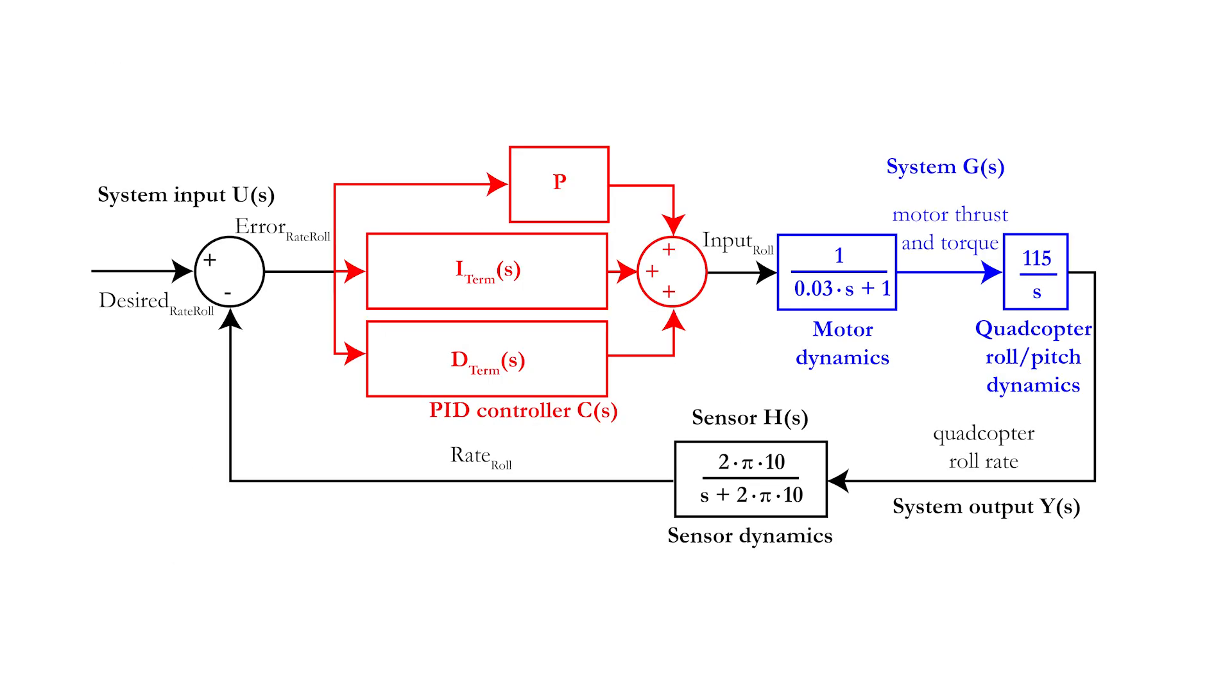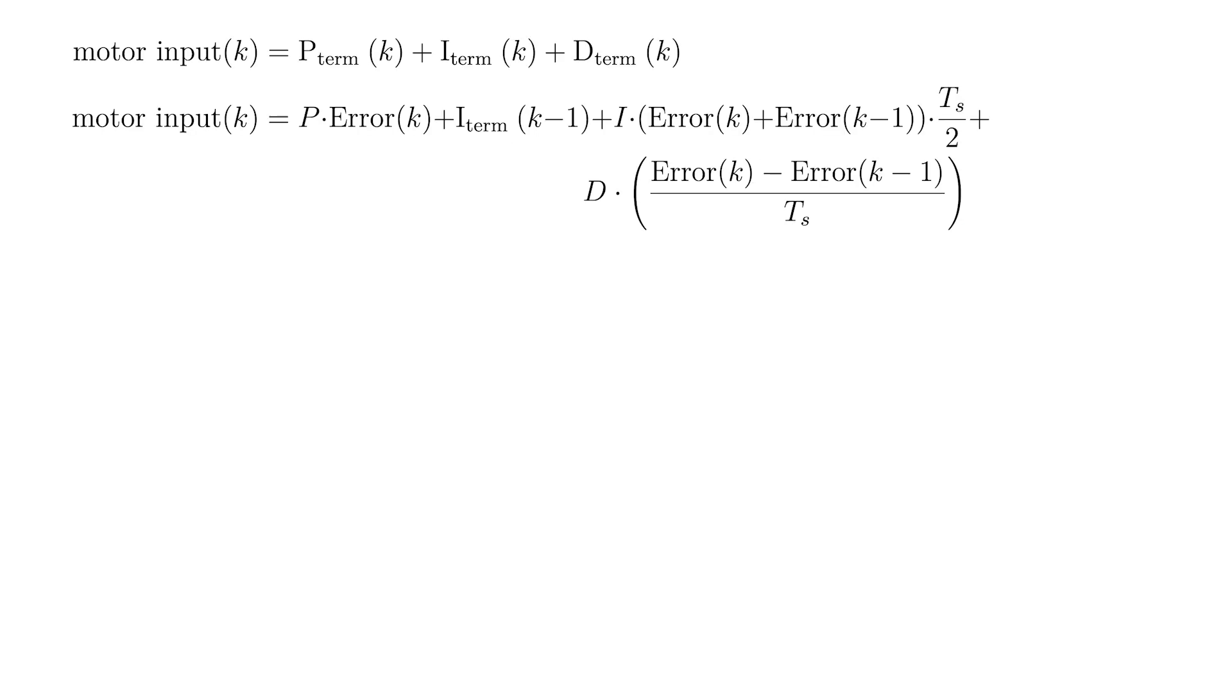Let's insert this transfer function in our control loop and move on to the derivative or D term of the controller. The derivative part of the equation in the k domain is highlighted once again in red on the screen, where D is a tuning constant. First, we need to perform the z transform using the scaling property.